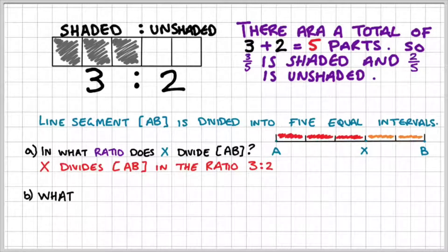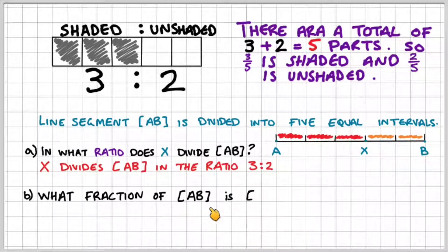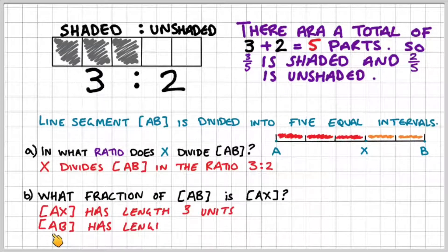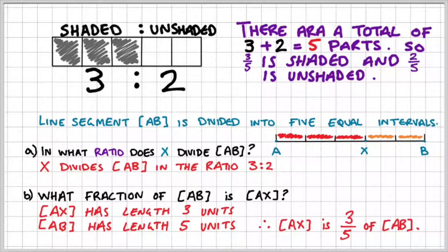Part B: what fraction of the line segment AB is AX? Well, we know that AX has a length of three units and that line segment AB has a length of five units. So therefore AX is going to represent three out of a total of five parts — three-fifths of AB.